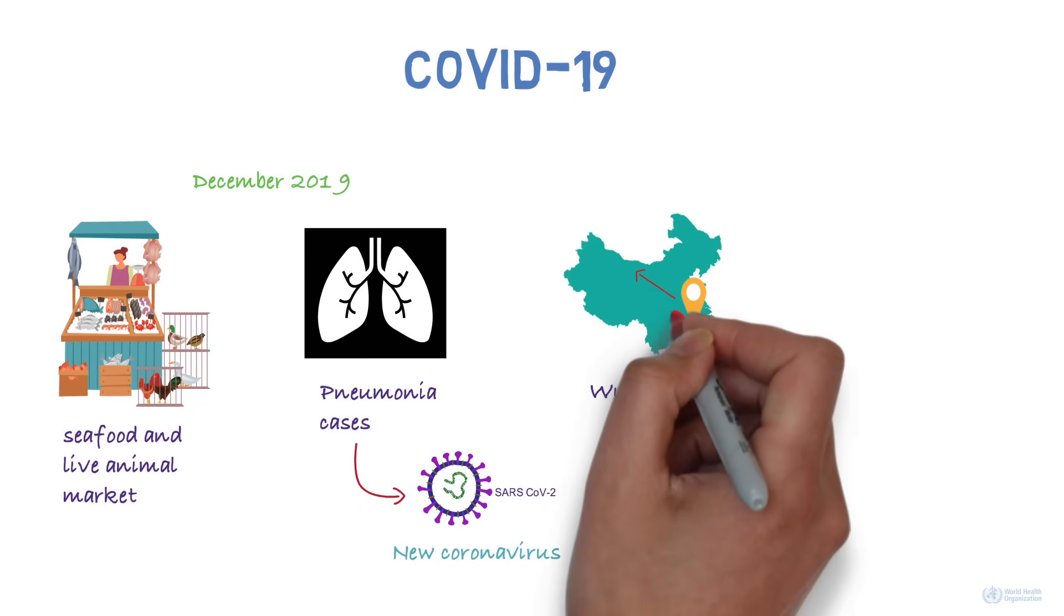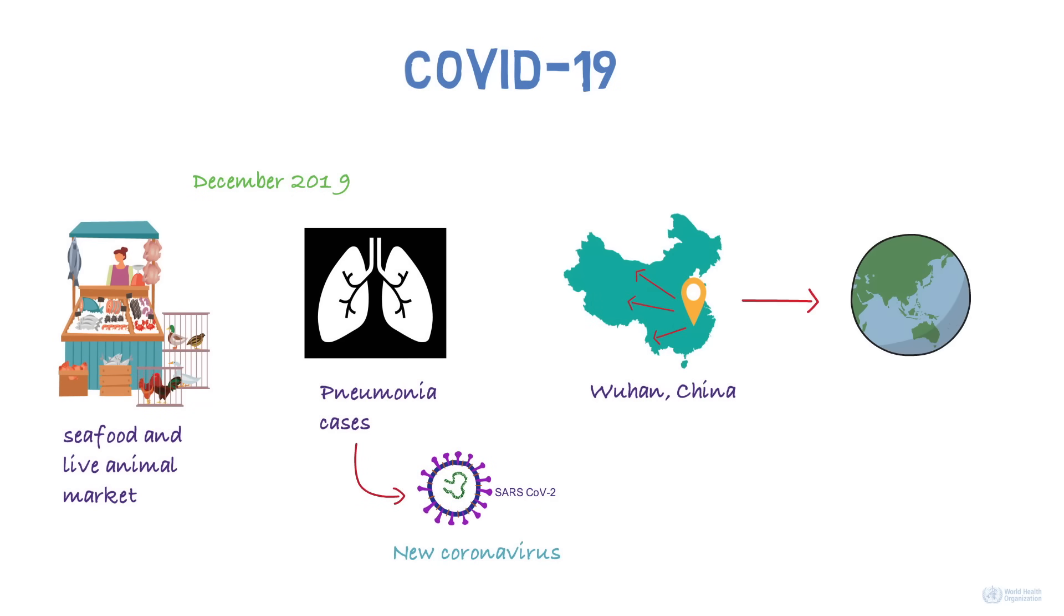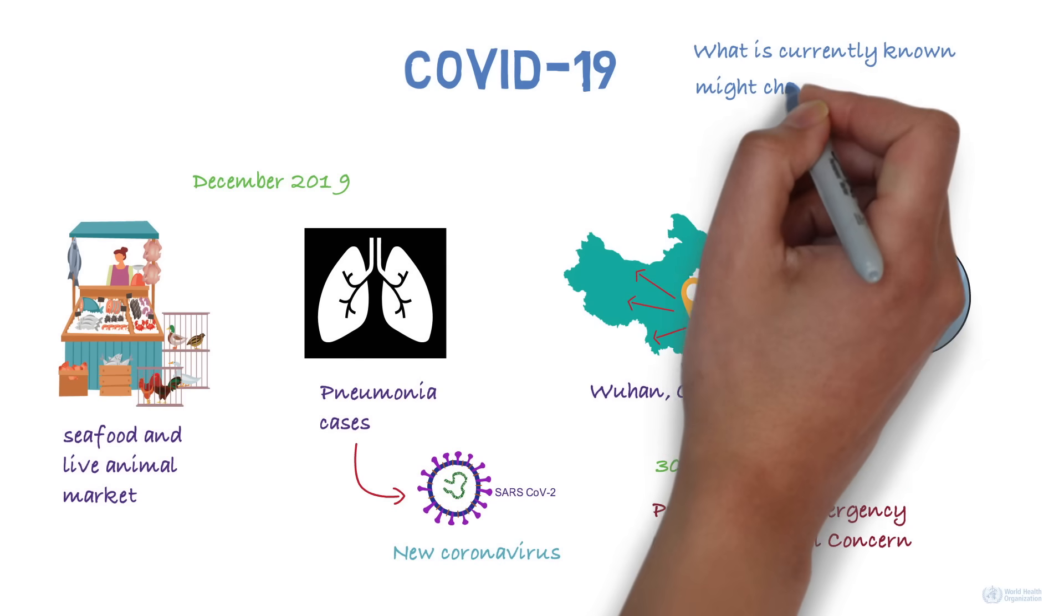COVID-19 spread within China and to the rest of the world. On 30 January 2020, the World Health Organization declared the outbreak a public health emergency of international concern. In this video, we'll take a quick look at what is currently known about COVID-19. Keep in mind that this is a new disease and what's known is rapidly evolving and might change in the future.